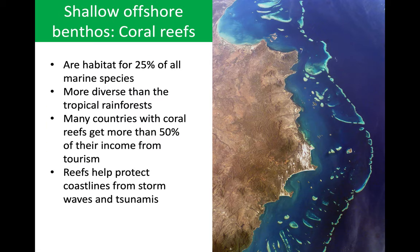Coral reefs are not extremely common as far as the area they cover, but they are habitat for about 25% of all marine species. Doesn't take up much of the ocean, but they do house a huge proportion of aquatic life. Considered more diverse than tropical rainforests. Many countries with coral reefs get a huge portion of their income from tourism just to visit those areas — the Great Barrier Reef being a huge example of that. And as a little side benefit, they protect coastlines from waves and tsunamis, right? A wave coming in is going to break over the reef prior to making it to the coastline.